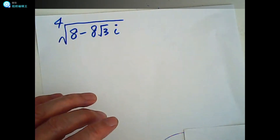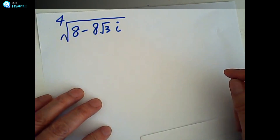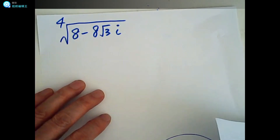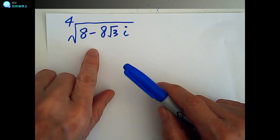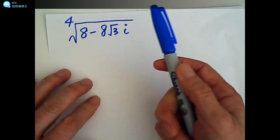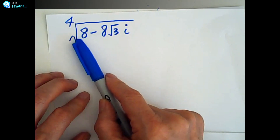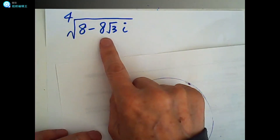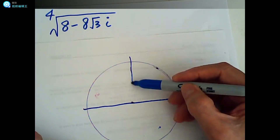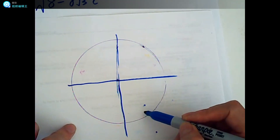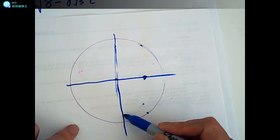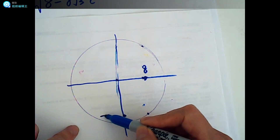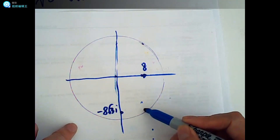I want to use this example to illustrate the way of finding the roots for a complex number in general. This is a complex number — we want to take the fourth root of it. We know that there are four roots altogether. The complex number is located here: this is 8, and this is negative 8 root 3 i.